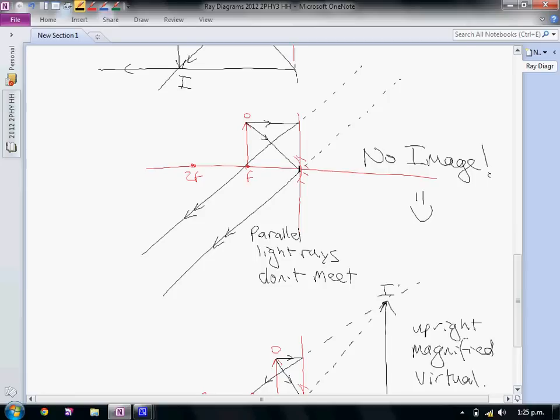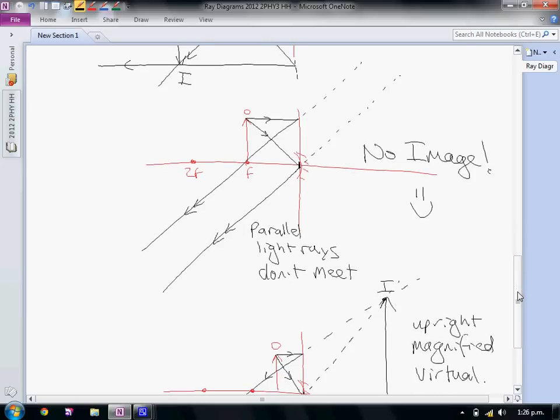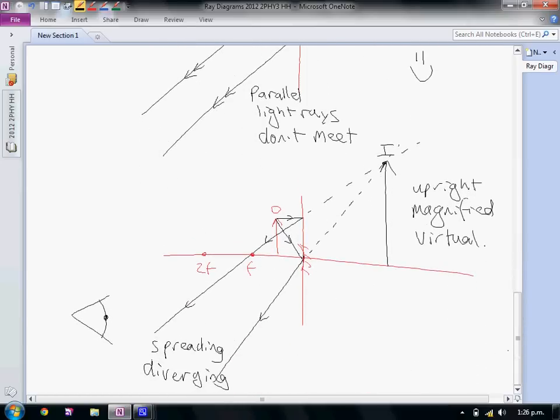This is the exact reverse as if we had a source way in infinity producing parallel light rays that converge on the focal point. This is how headlights work in your car: you have a mirror and a light source at the focal point shining into the mirror, and it reflects in parallel rays so you can direct the beam. The last one, shifting the object inside the focal point, we get this reflection pattern that is spreading out or diverging. They appear to come from a point which produces an upright, magnified, virtual image.